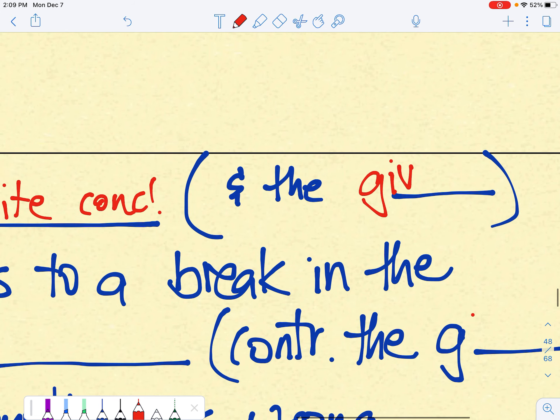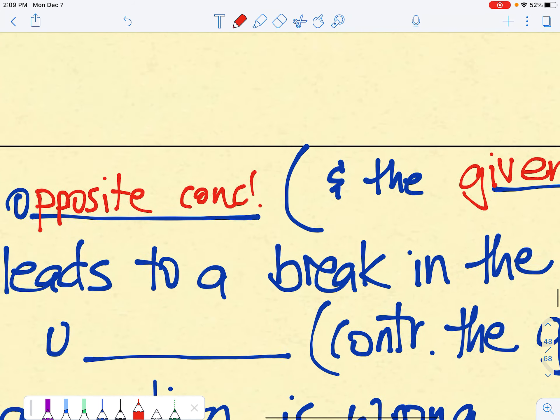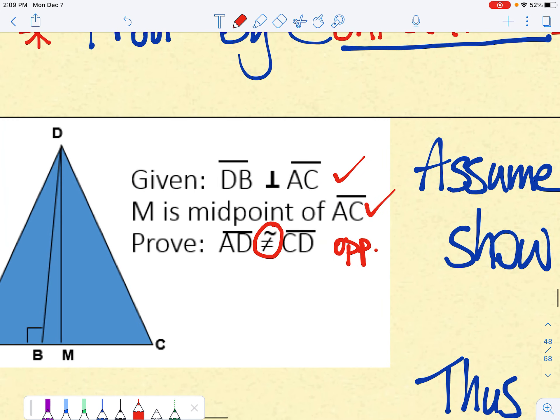That is, we're going to assume that all the stuff that I highlight is true. And then we're going to take the prove statement, and we're going to flip it on its head. We're going to take the opposite of that statement.